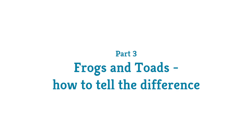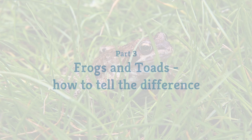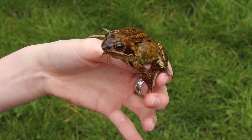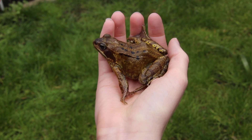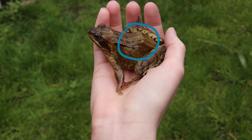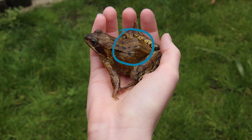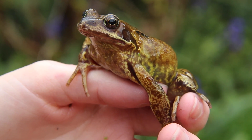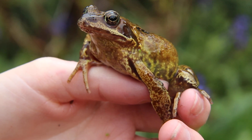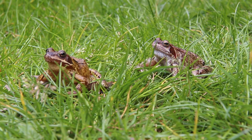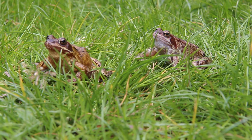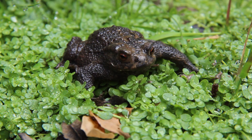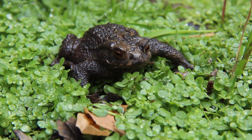Now let's look at how to tell the difference between the common toad and common frog. The common frog is a familiar pond dweller. They have smooth skin and are relatively athletic, jumping about if netted or caught. They have large hip bones needed to support their powerful leg muscles when the frog is in a sitting position. Common frogs are unlikely to present too many problems in identification, provided that you remember how variable they can be in colouration and markings. Funny coloured frogs, especially from garden ponds, invariably turn out to be common frogs.